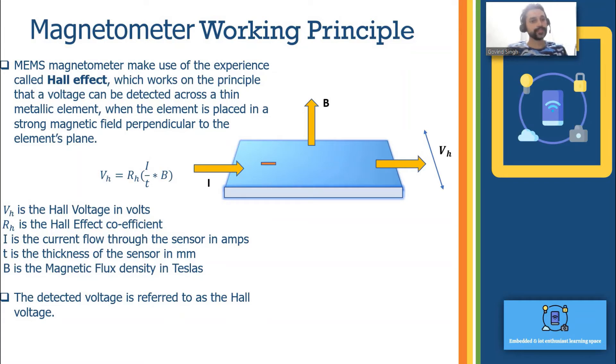MEMS magnetometer makes use of an experience or phenomenon called Hall effect which works on a principle that voltage can be detected across a thin metallic element or thin metallic surface when it experiences a strong magnetic field perpendicular to its element plane. When a current carrying conductor experiences a magnetic field perpendicular to its surface, the voltage is detected. This is called Hall effect.